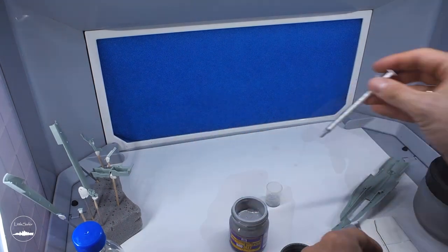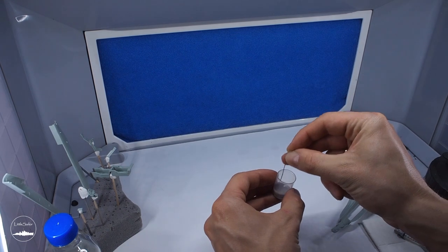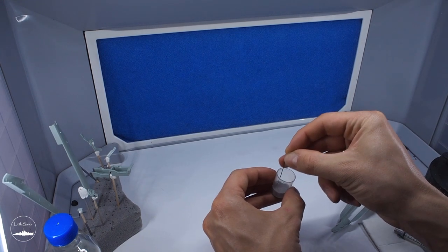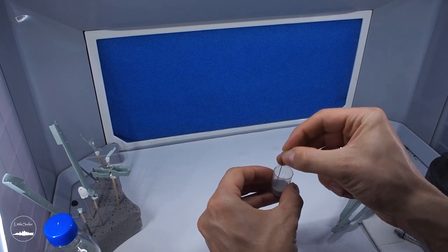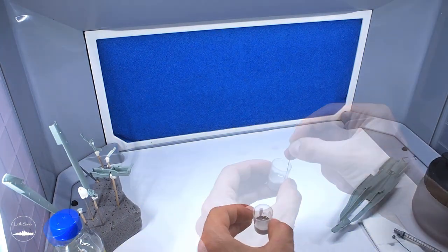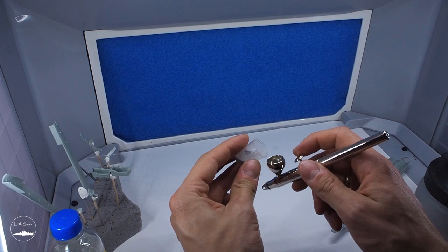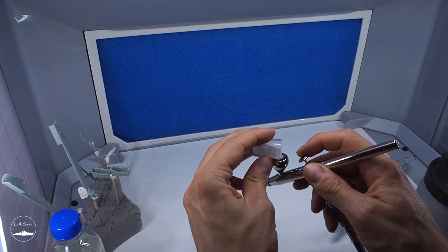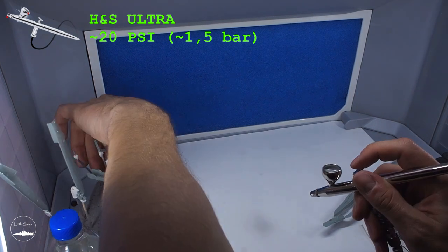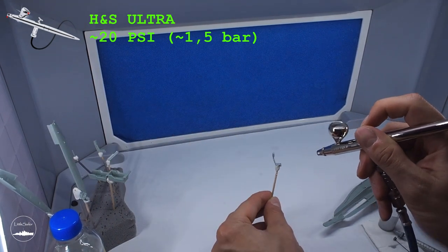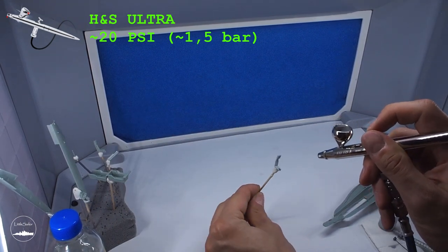I mixed the paints with thinner in a small container and then poured it into the airbrush. I set the pressure on the compressor about 20 psi and I've painted the prepared elements.